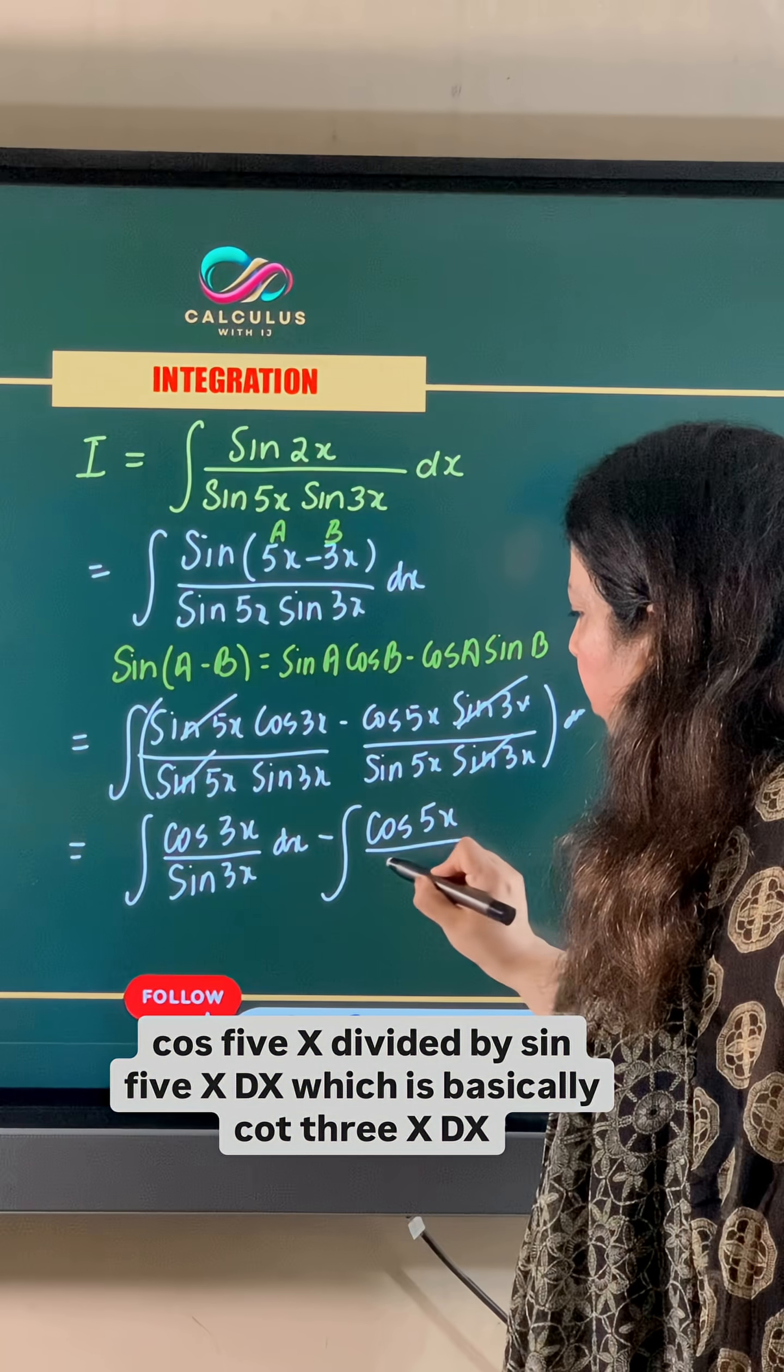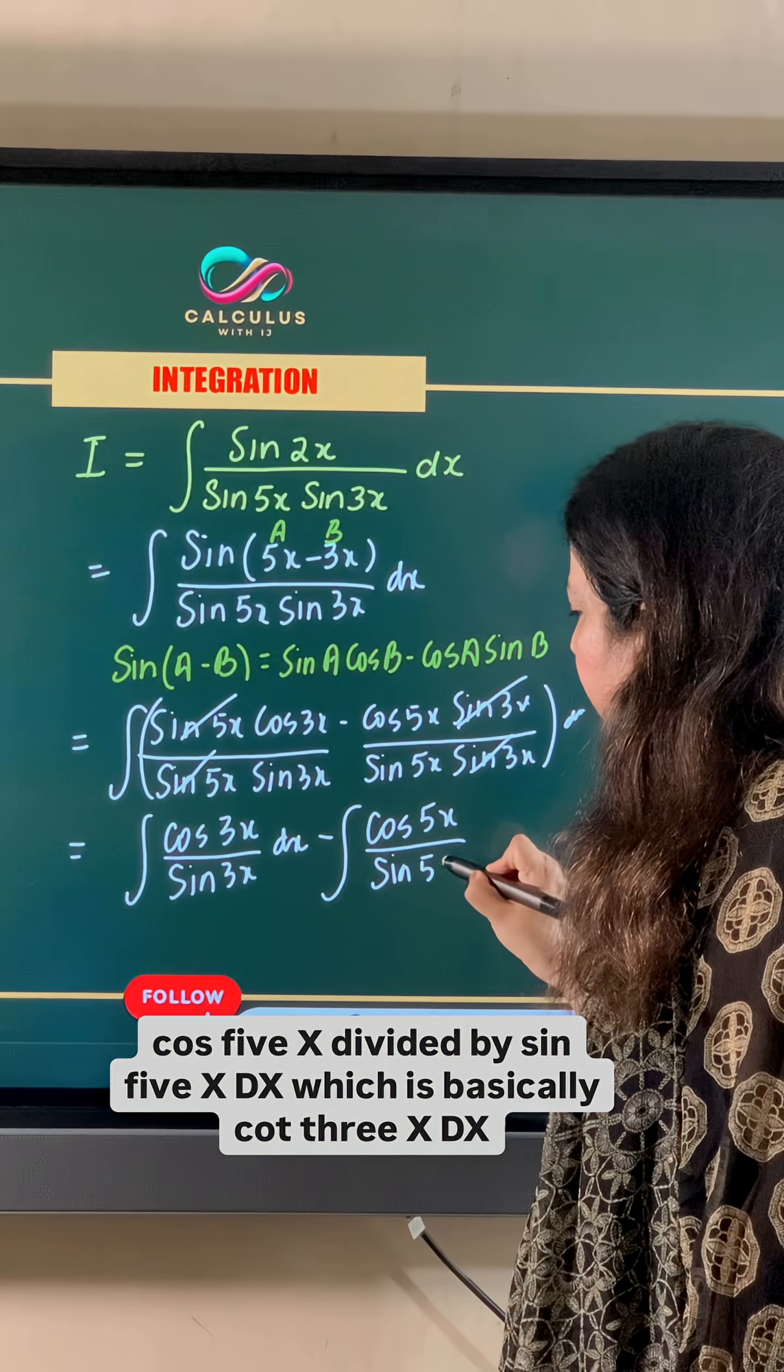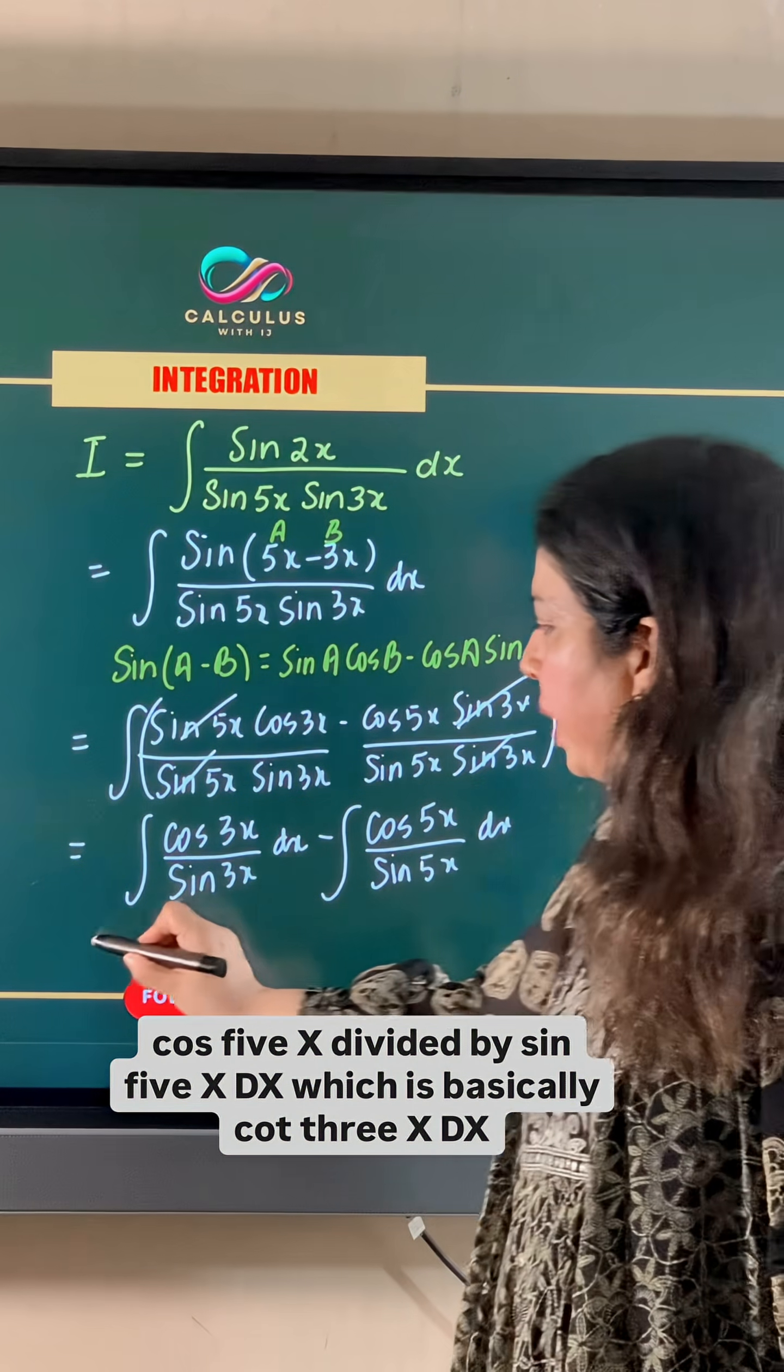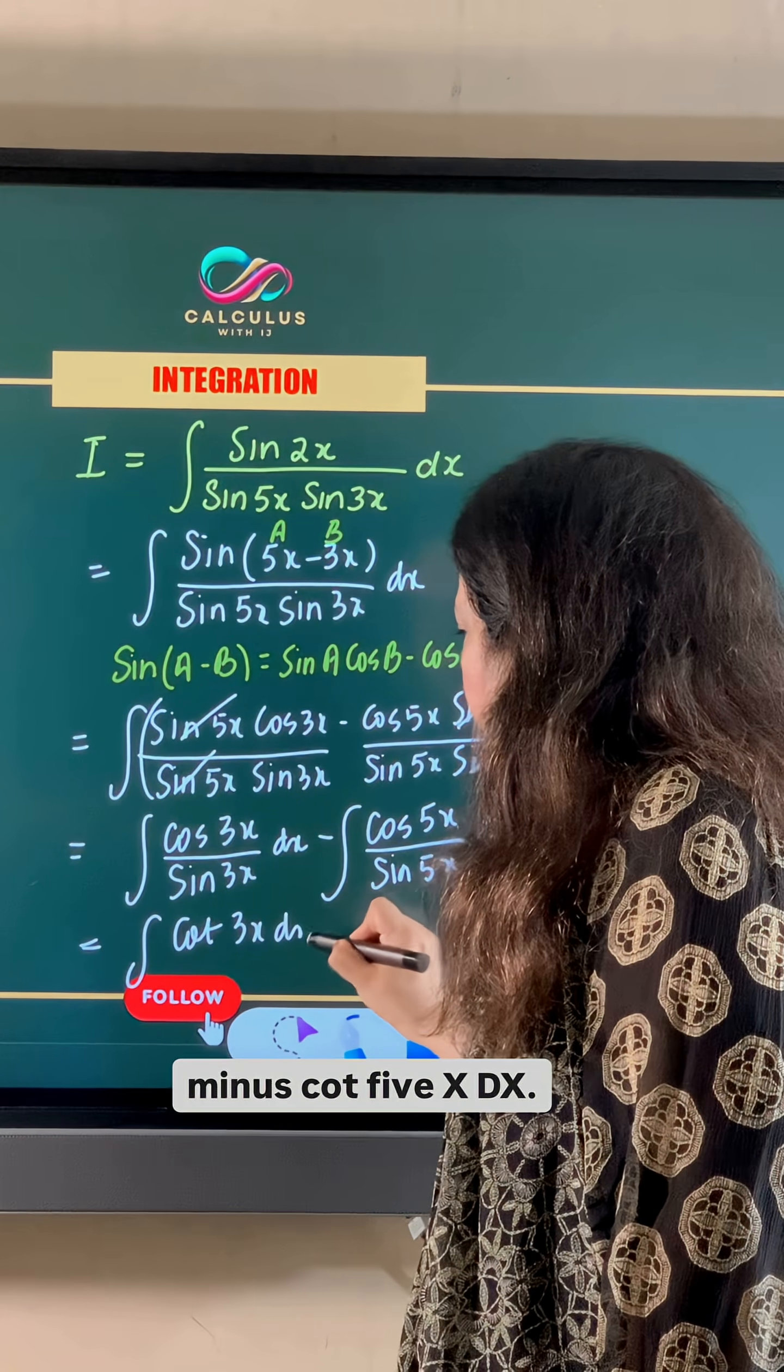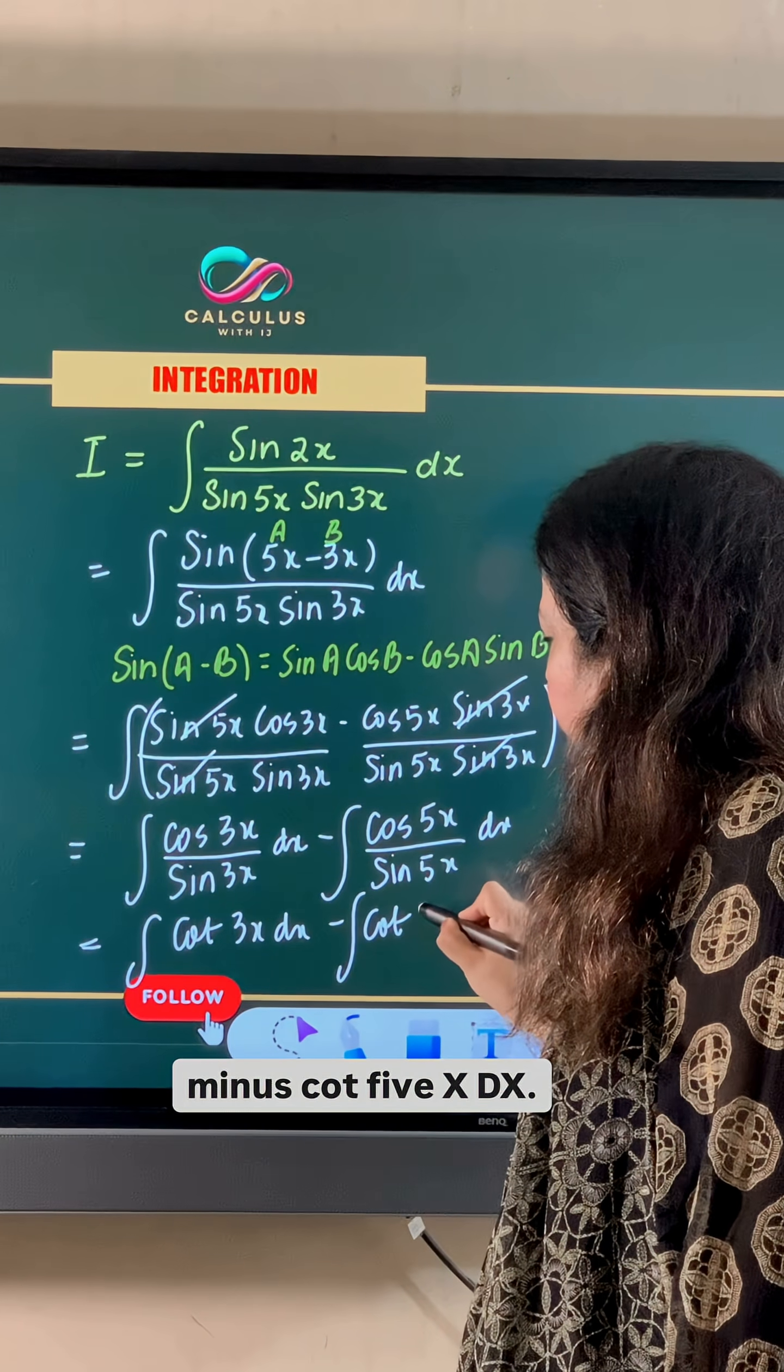We are left with cos 5x divided by sin 5x dx, which is basically cot 3x dx minus cot 5x dx.